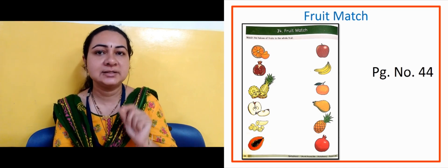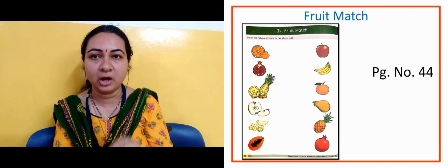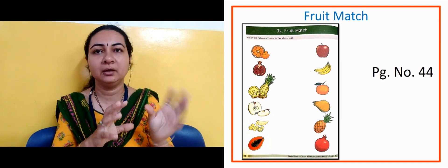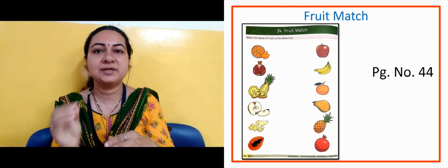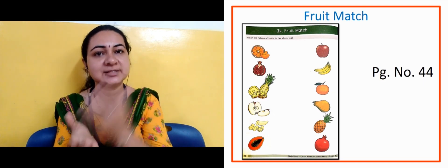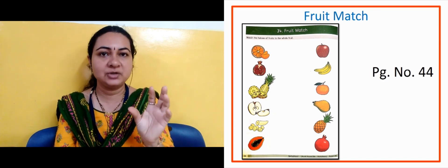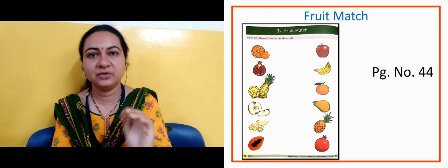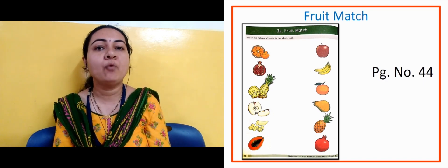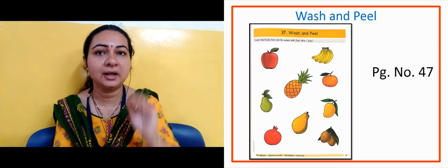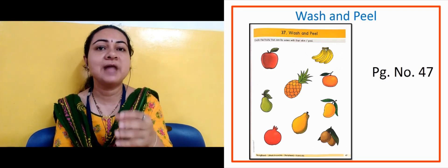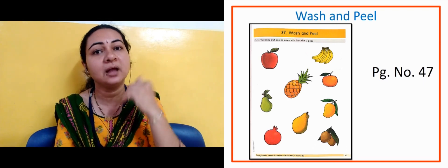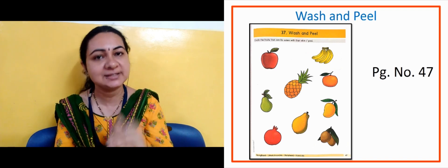Fruit Match — this is on page number 44. In this activity we matched the cut/sliced image of a fruit with the whole fruit. For example, an orange slice was shown and a whole orange was shown, and we connected them. Do this revision once more. Now the next slide is 'Wash and Peel' on page number 47. The fruits that we eat with the peel — meaning we can eat them with the skin — those fruits we circled.